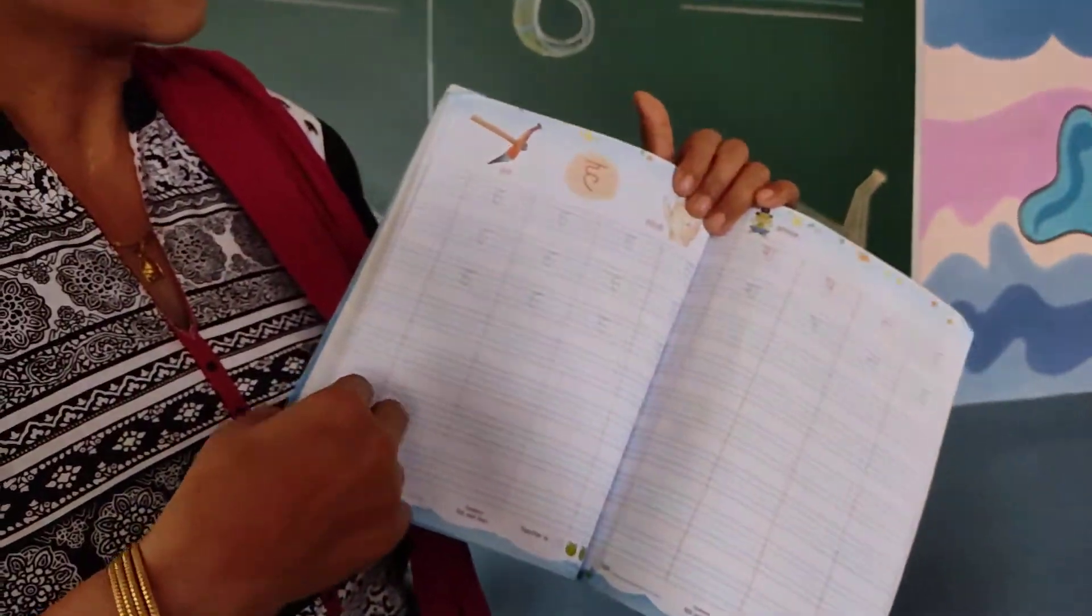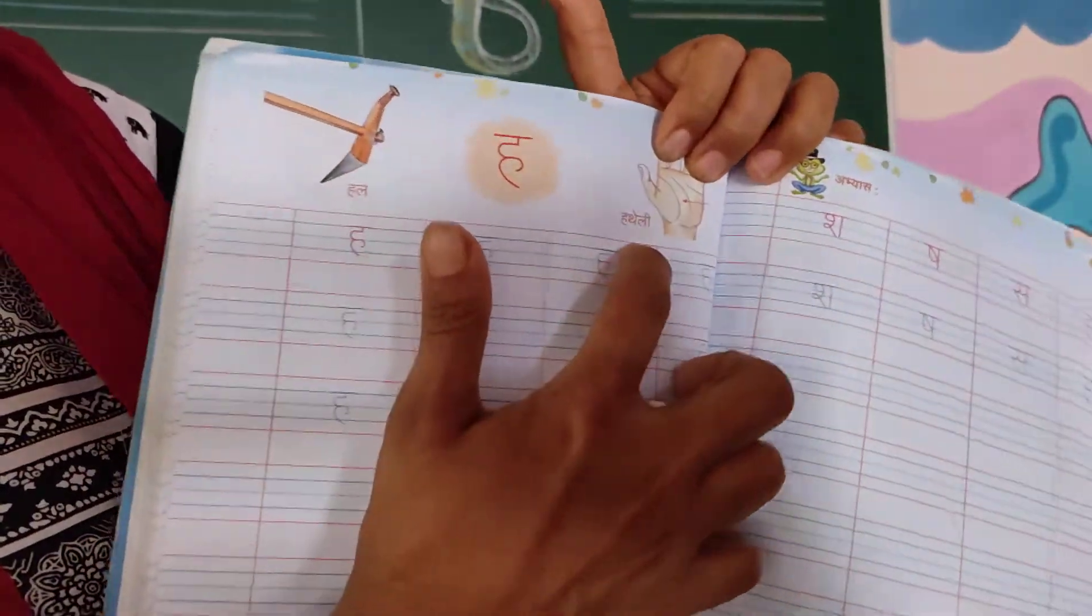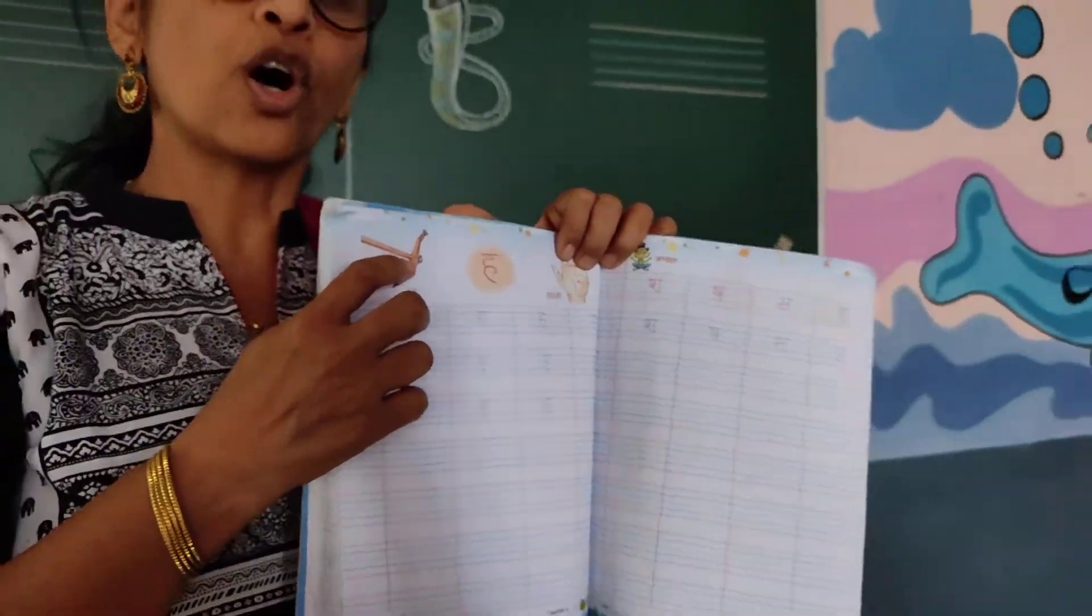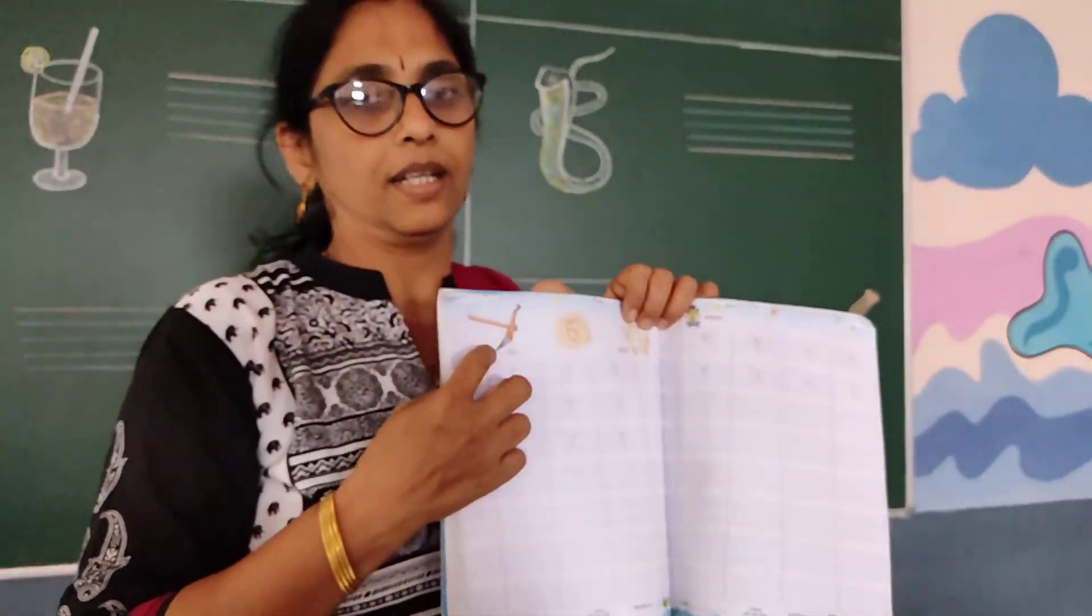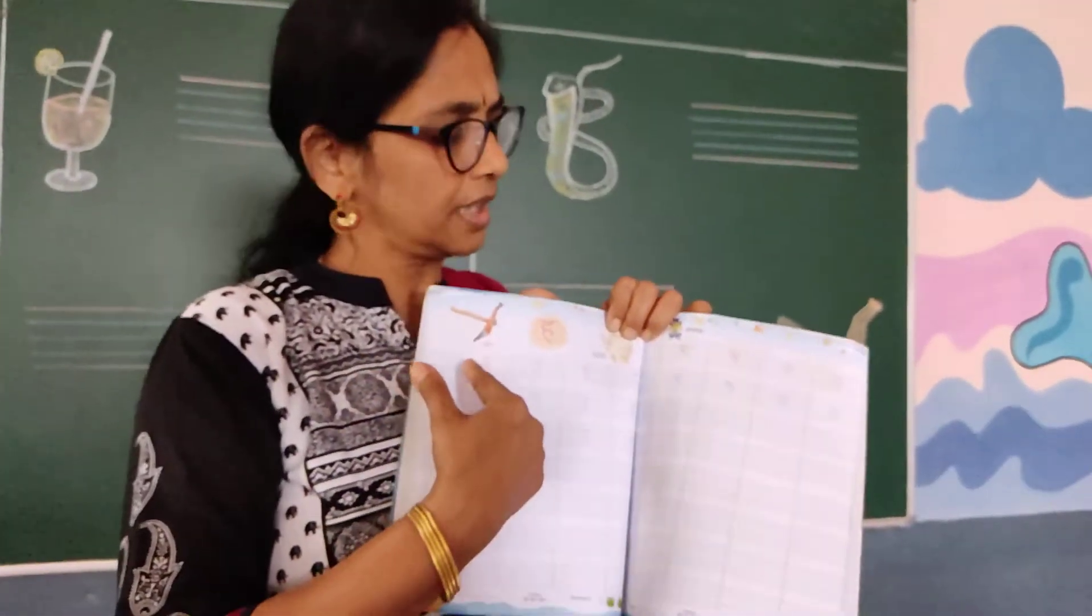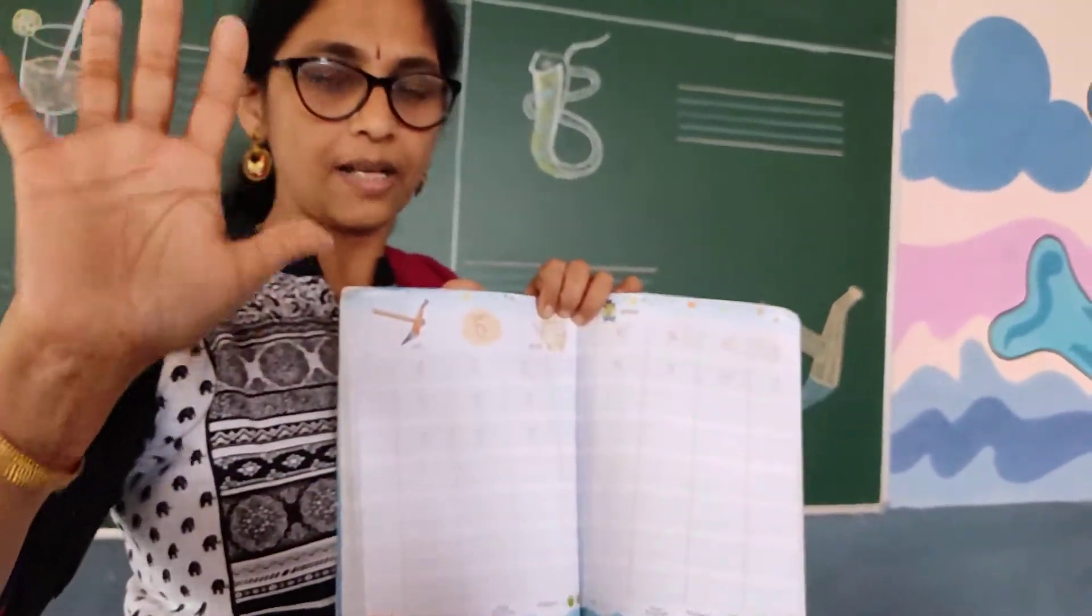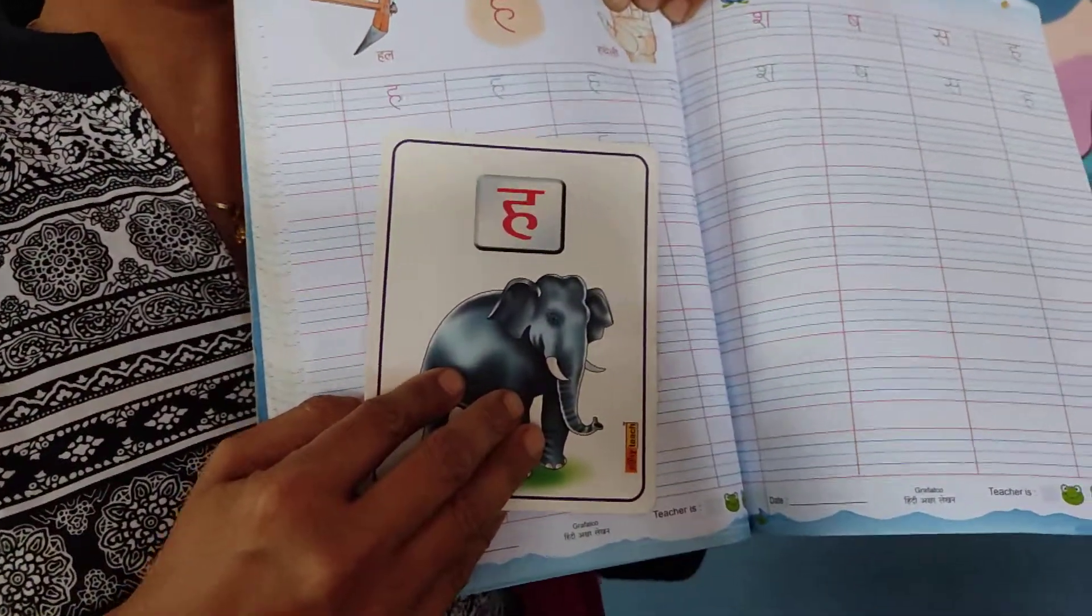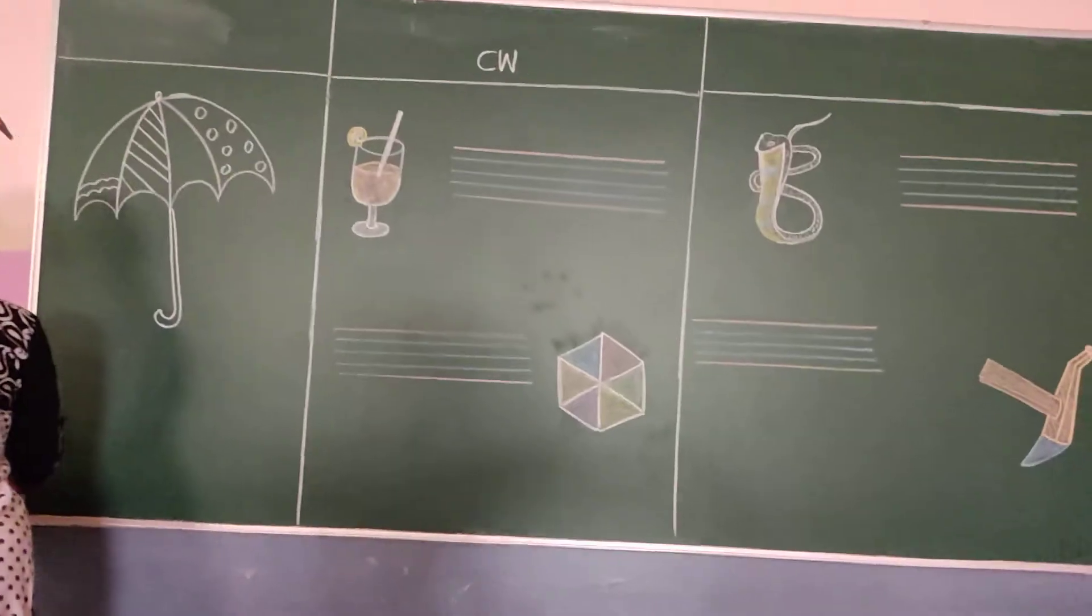Today's last letter is ha. Ha se hul, ha se hatheli. Hul means this one is used farm, field. Ha se hatheli. Shah se hatheli. These letters.